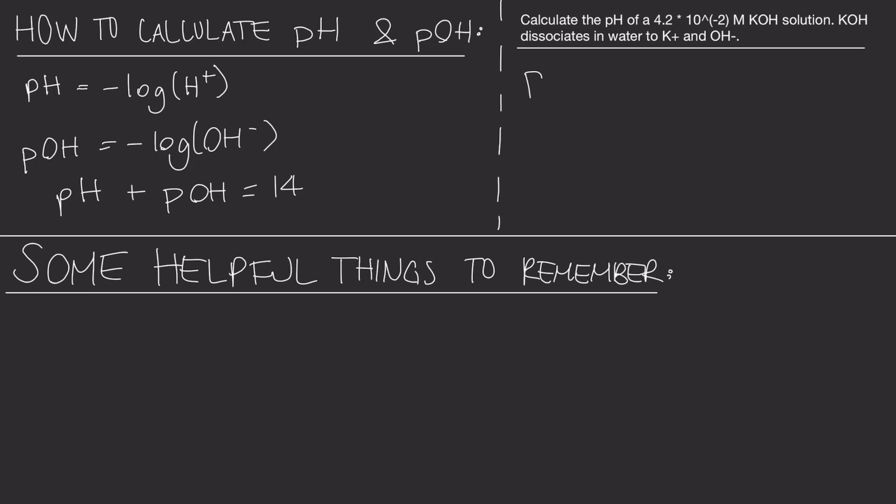If you said pOH equals negative log OH, you're right. You can use this because it dissociates into hydroxide ions. First, insert that number into the equation and plug it into your calculator to solve.